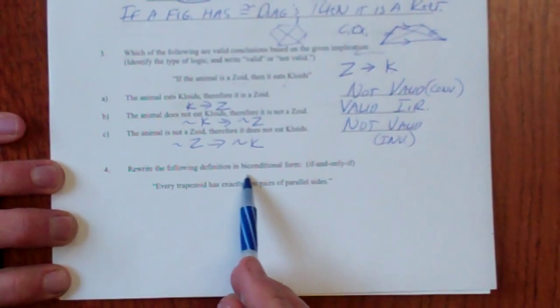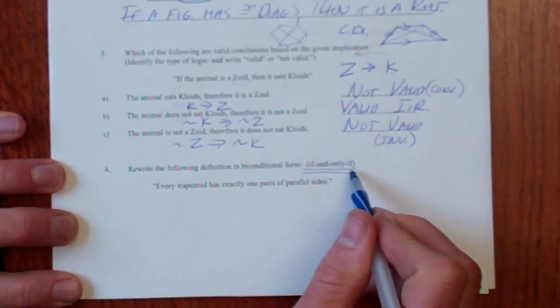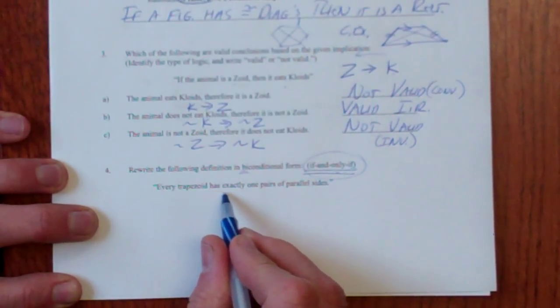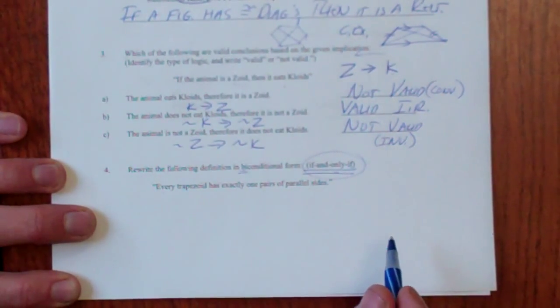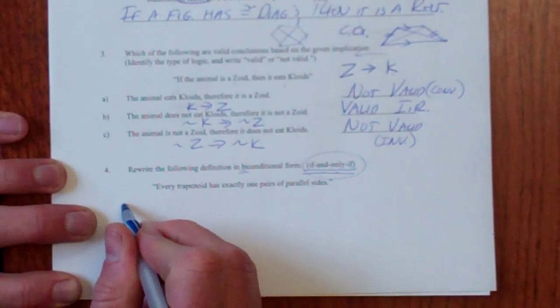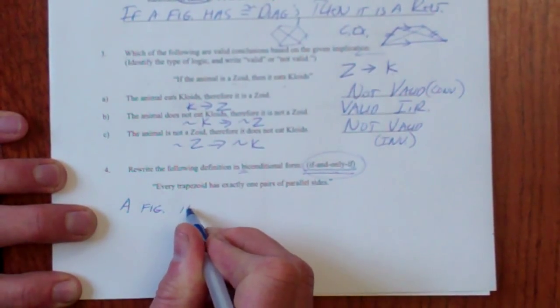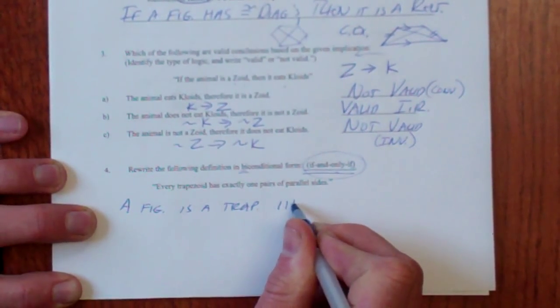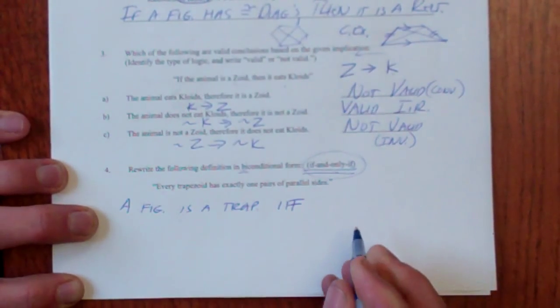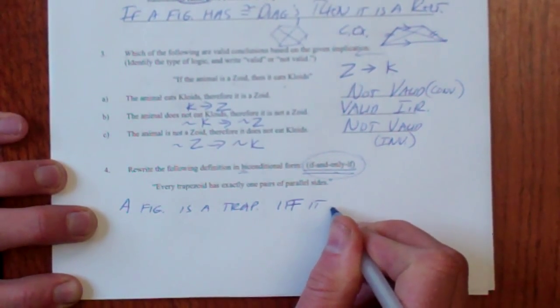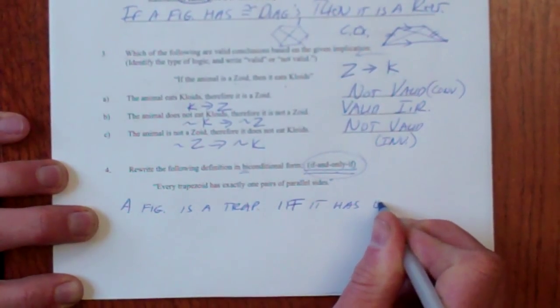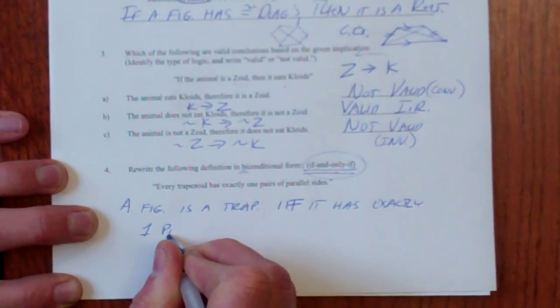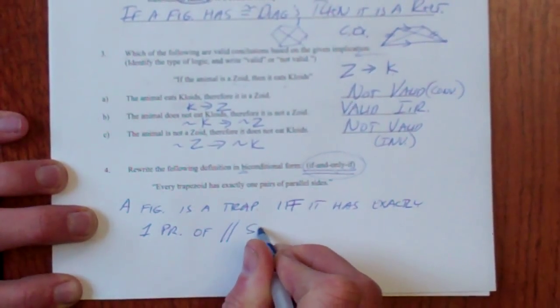Alright, here it says rewrite the following definition in biconditional if and only if form. I might not write that on a test, so you need to know biconditional means if and only if. Every trapezoid has exactly one pair of parallel sides. I would say a figure is a trapezoid if and only if. And that's the abbreviation for that. If and only if.